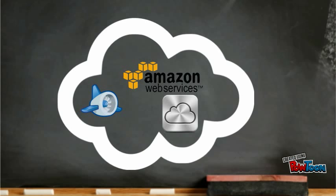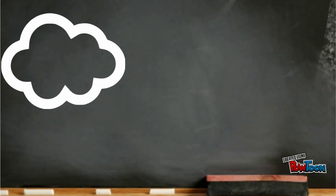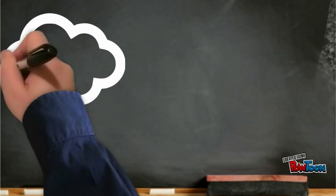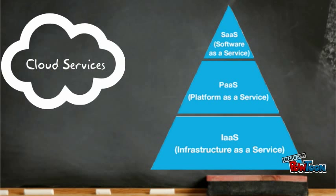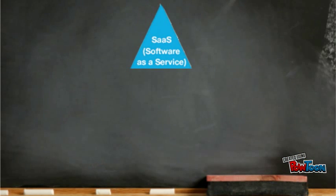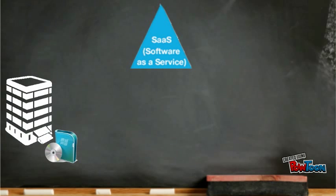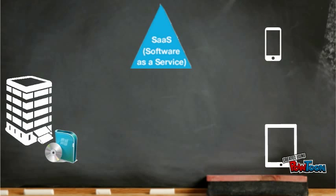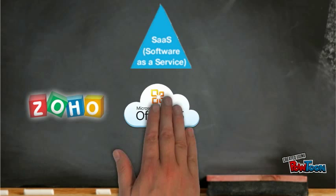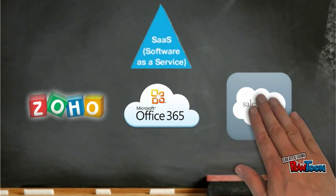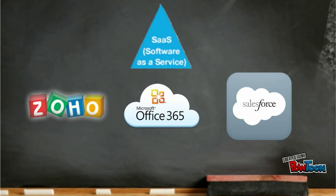Now we'll take a look at cloud computing based on the types of services offered. The service can be classified into three different types: software, platform, and infrastructure as a service. Software as a service is a software delivery method that provides access to software and its functions remotely as a web-based service. Customers use the application running on the company's system. Zoho, Microsoft Office 365, and Salesforce.com are some of the best-known examples.